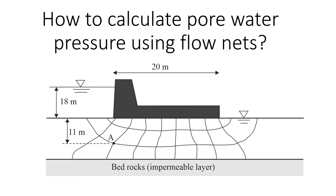This video will explain how to calculate pore water pressure using flow nets. We're going to look at an example where we have a dam with upper and lower water levels, and water seepage underneath. We're already given the flow net and we need to find the pore water pressure at point A.